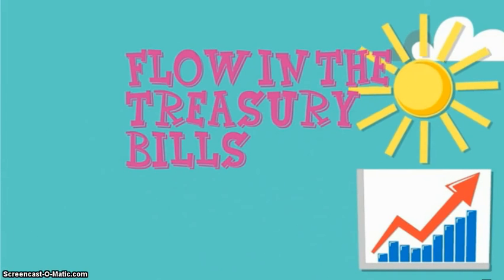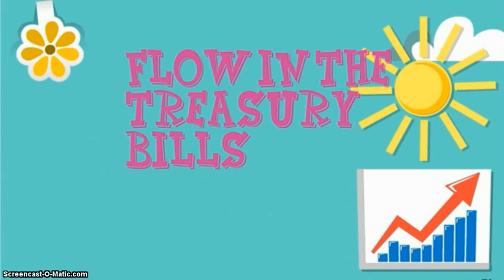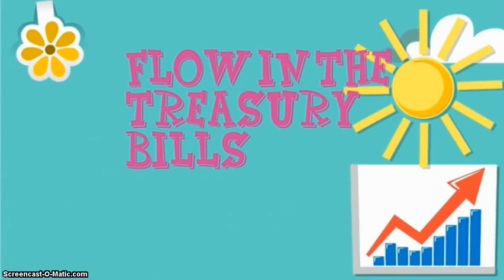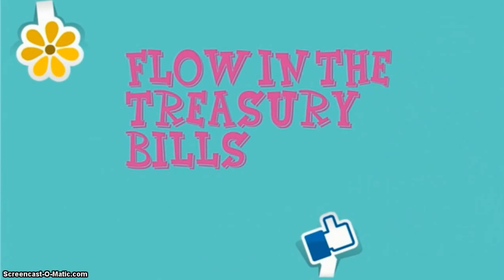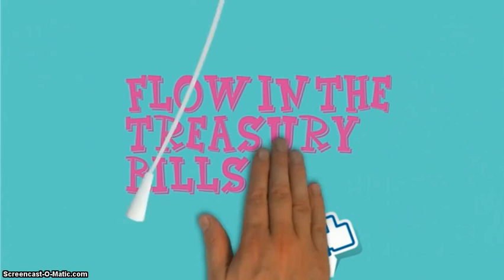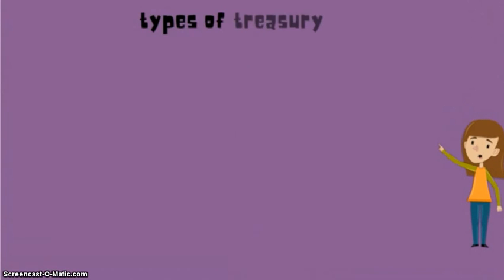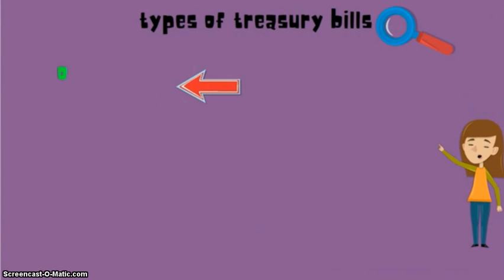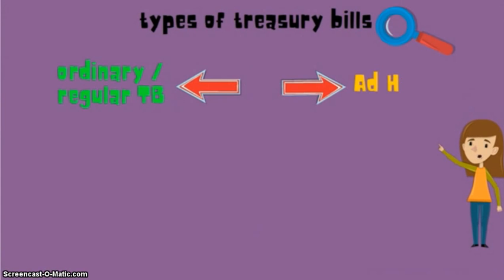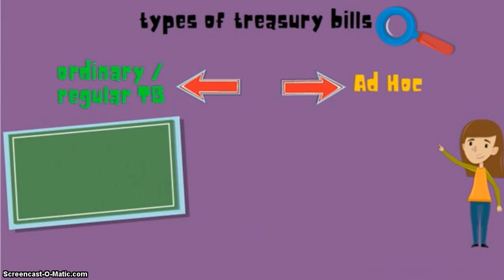This is the flow in Treasury Bills. There are two types of Treasury Bills: first is ordinary or regular TB, and second is ad hoc.